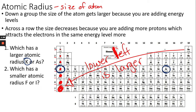Which has a smaller atomic radius — fluorine or iodine? Fluorine is here and iodine is here. Fluorine would have the smaller atomic radius because it has fewer energy levels.